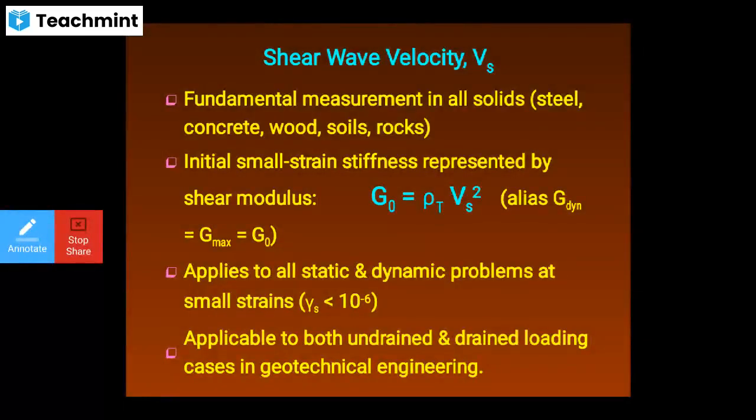Shear wave velocity Vs is the fundamental measurement in all solids — steel, concrete, wood, soil, rocks. Initial small-strain stiffness is represented by the shear modulus: G0 = ρ × Vs². G_dynamic = G_maximum = G0. This applies to all static and dynamic problems at small strains (γ < 10⁻⁶) and is applicable to both undrained and drained loading cases in geotechnical engineering.